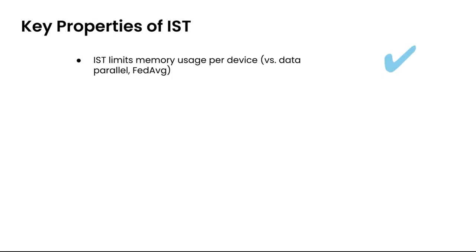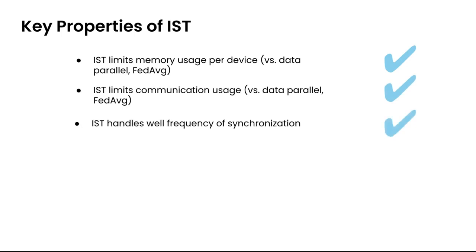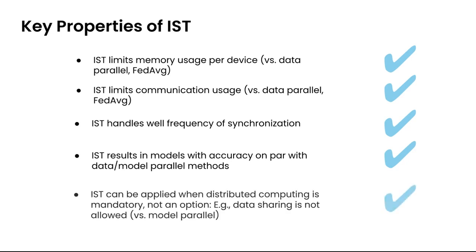So to summarize this abstract discussion so far, IST seems to limit memory usage per device because smaller model versions are shared to workers, thus further limiting communication usage. IST seems to handle less strictly the frequency of synchronizations in contrast to model parallelism where exact pipelining is often required. What we will show next also is that IST also results to almost no loss of accuracy and can be applied to settings where distributed computation is mandatory, like federated learning settings.